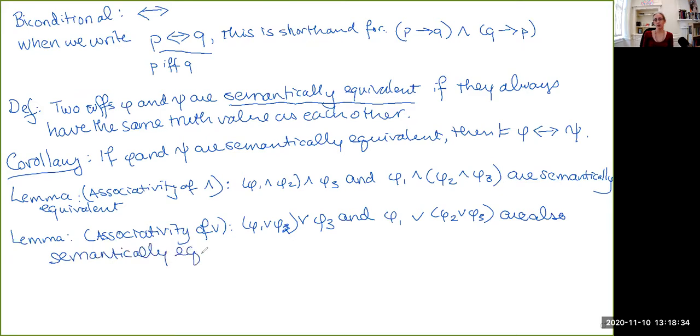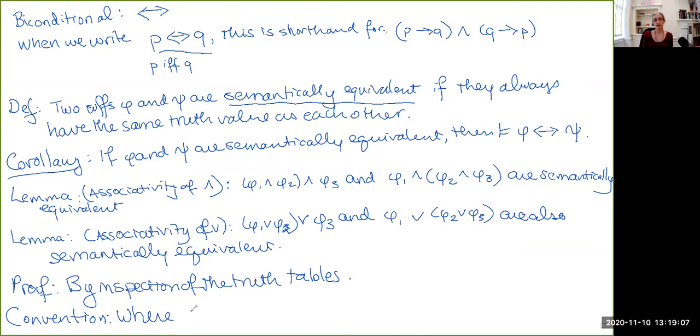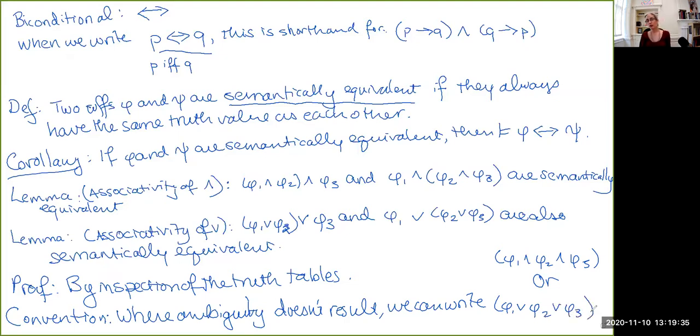Now, I'm not going to actually give you the proof of this. What you would have to do to prove both of these is to just draw out the full truth table and check that they have the same truth value at every line of the table. So proof, we can say, is by inspection of the truth tables. So this is something that I will leave as an exercise for you, if you really want to do it. But then we will use this fact to adopt a convention where we don't end up with ambiguity. So where ambiguity doesn't result, we can write something like phi one and phi two and phi three. So three conjunctions within these parentheses, or in the case of disjunctions, phi one or phi two or phi three. So essentially what I've done is we've dropped the internal brackets because it doesn't really matter which ones we take first.